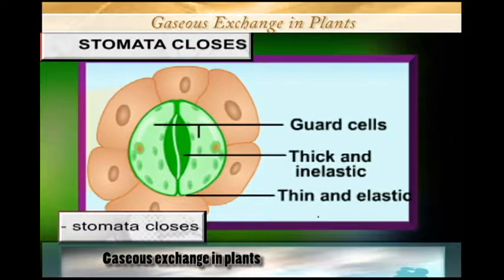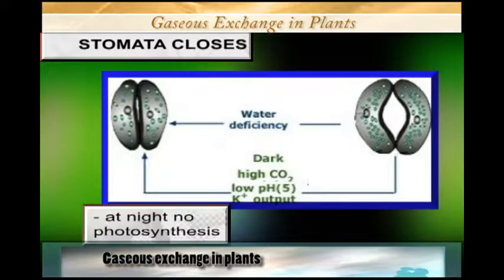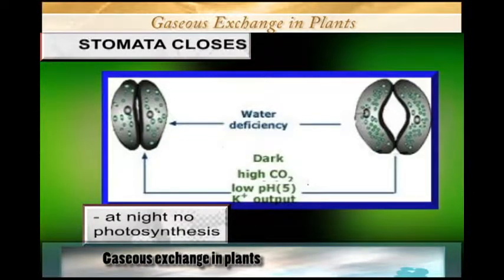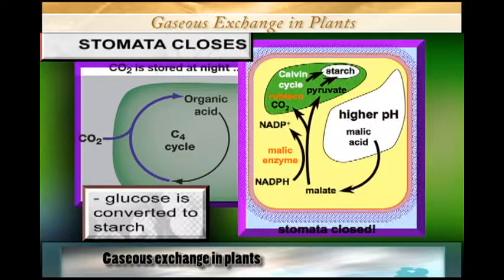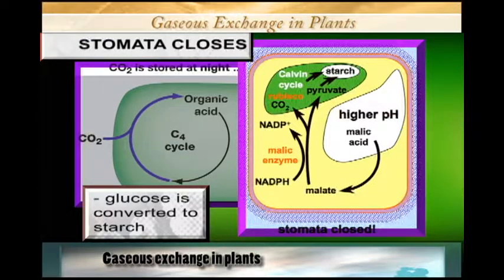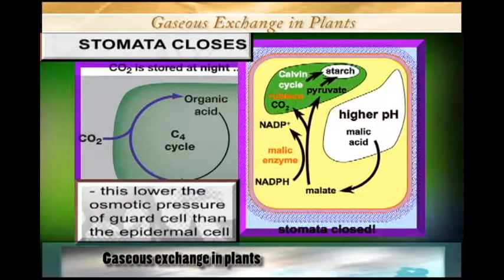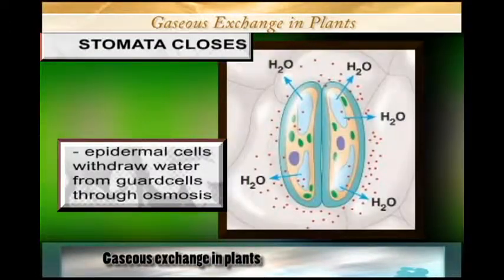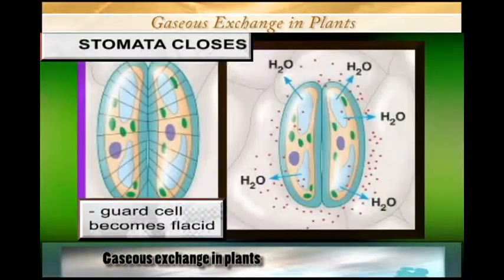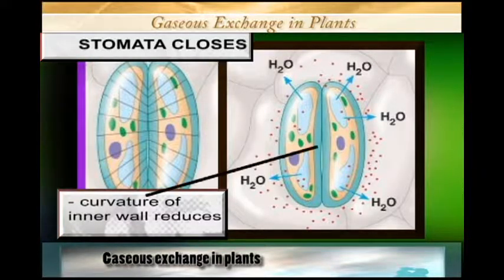So we are saying that the closing of the stomata usually takes place when there is no light, and because of this there is no photosynthesis. The glucose that was manufactured during the day is converted into starch, and when converted into starch the osmotic pressure of the guard cell falls. This brings about the epidermal cells withdrawing water from the guard cell, the guard cell becomes flaccid, the thinner outer wall shrinks, and the curvature of the inner wall reduces.